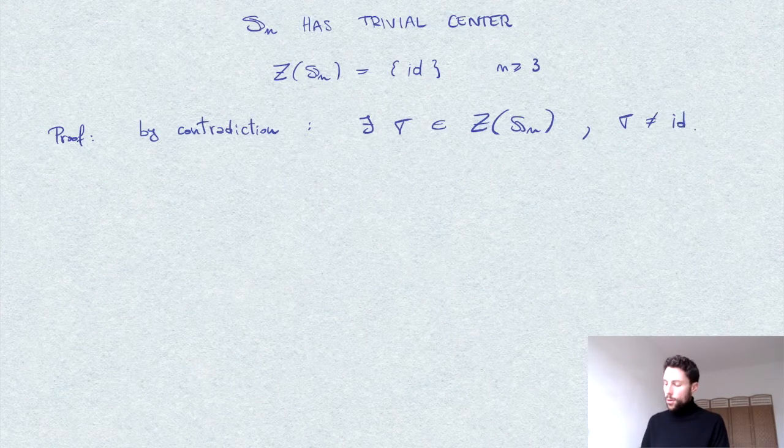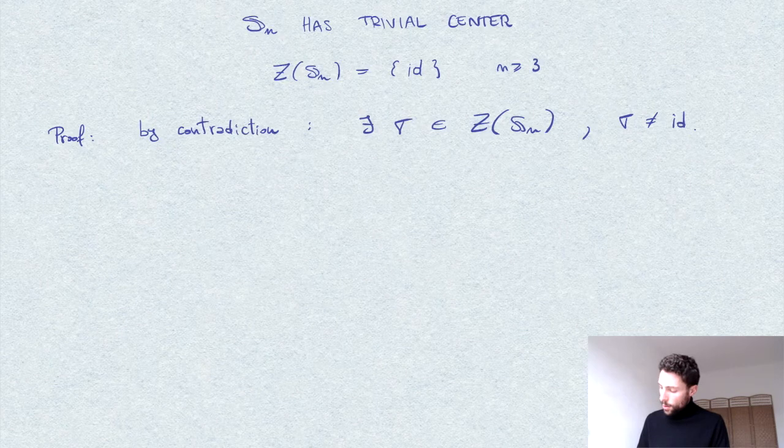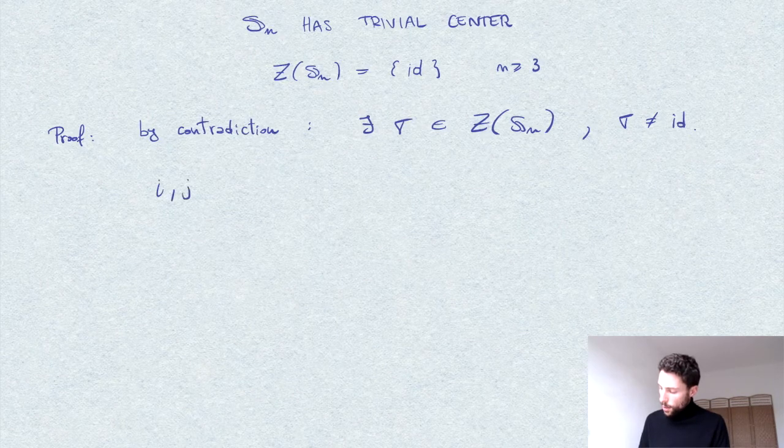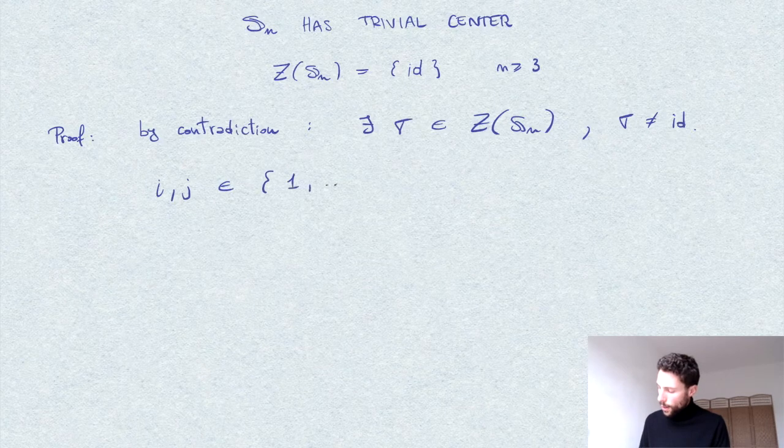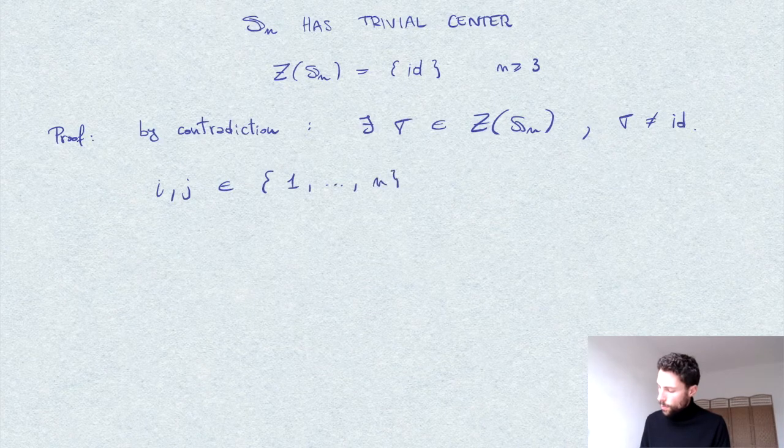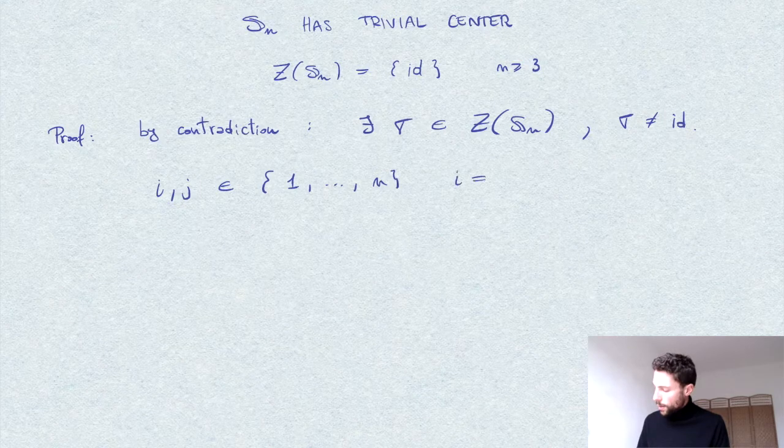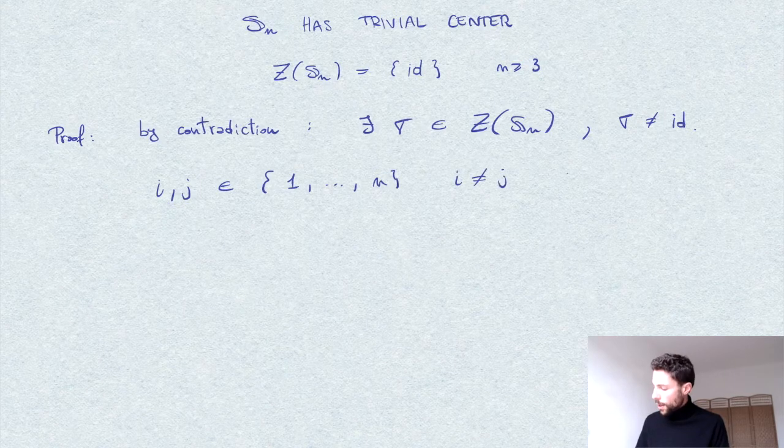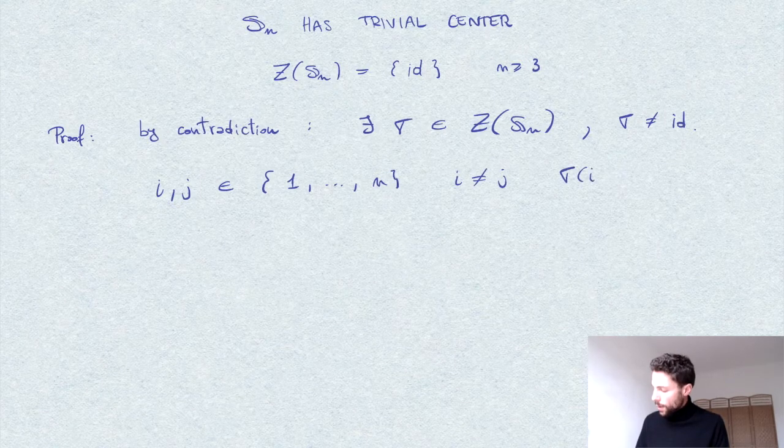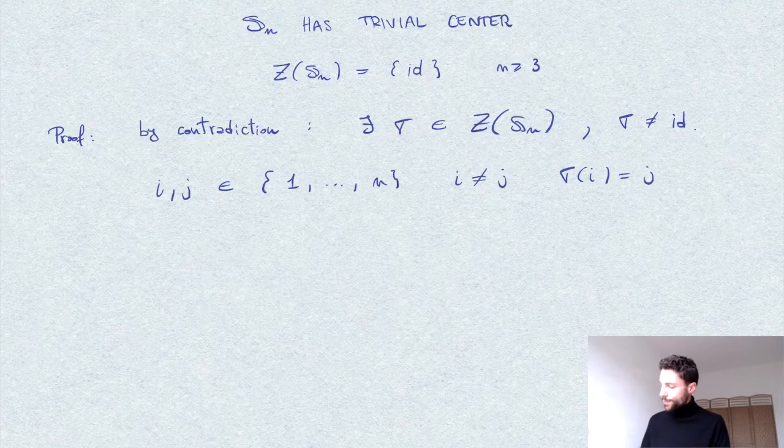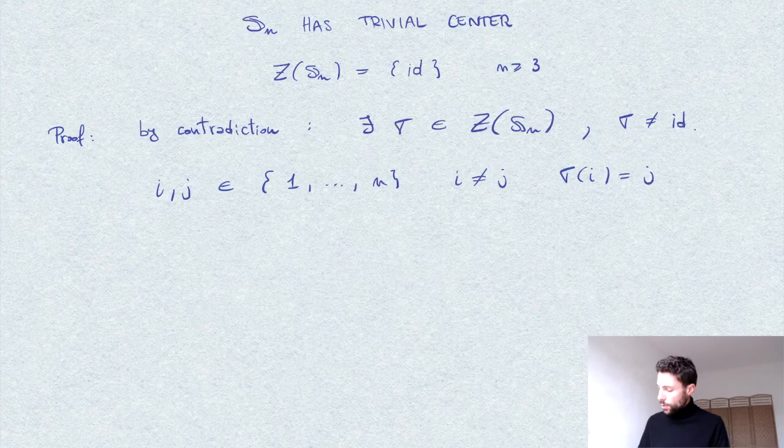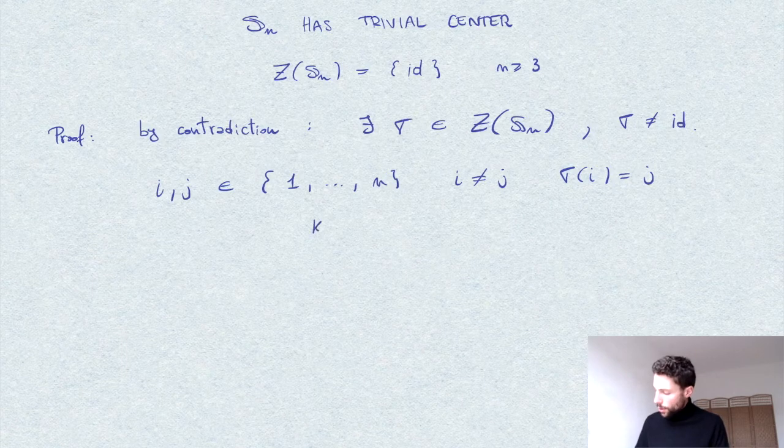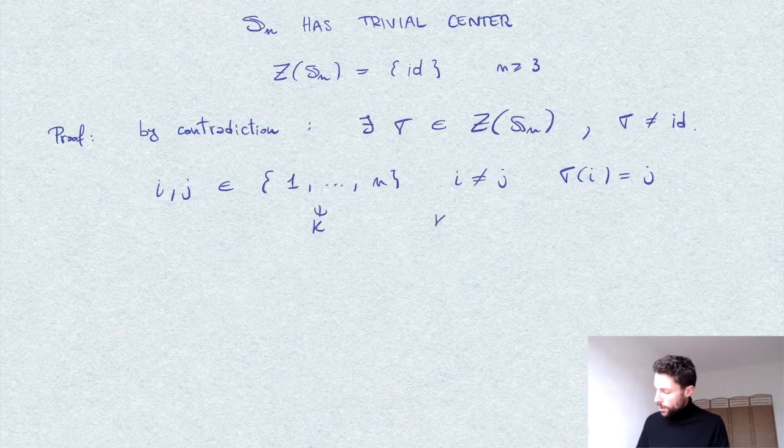Now this means that we can choose i and j, two distinct numbers between one and n, with i different from j and sigma of i equal to j. Now because n is at least three, we can also choose a third number k different from these two.